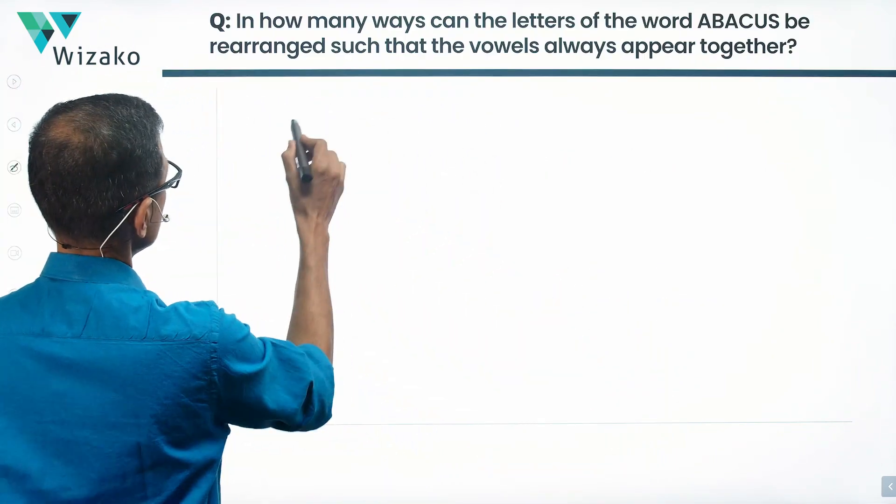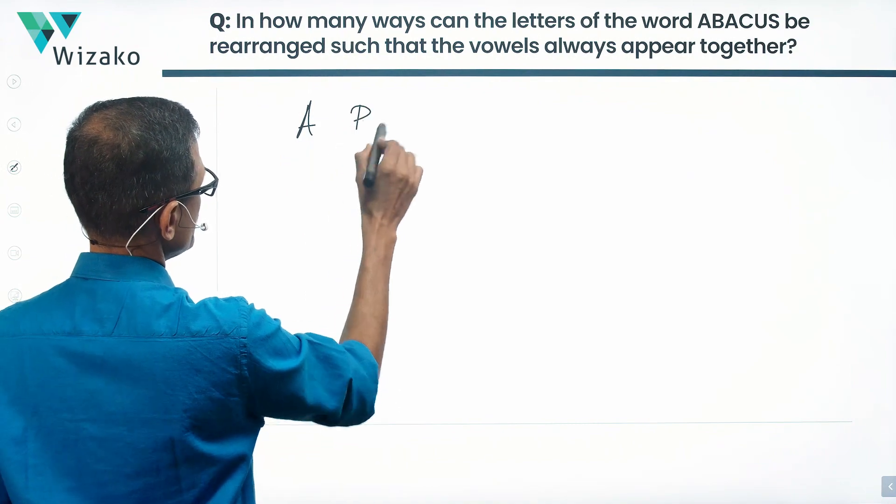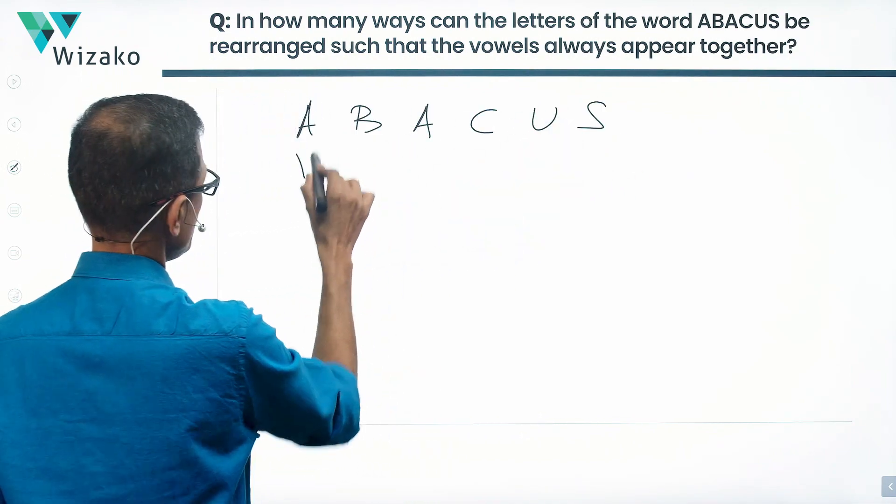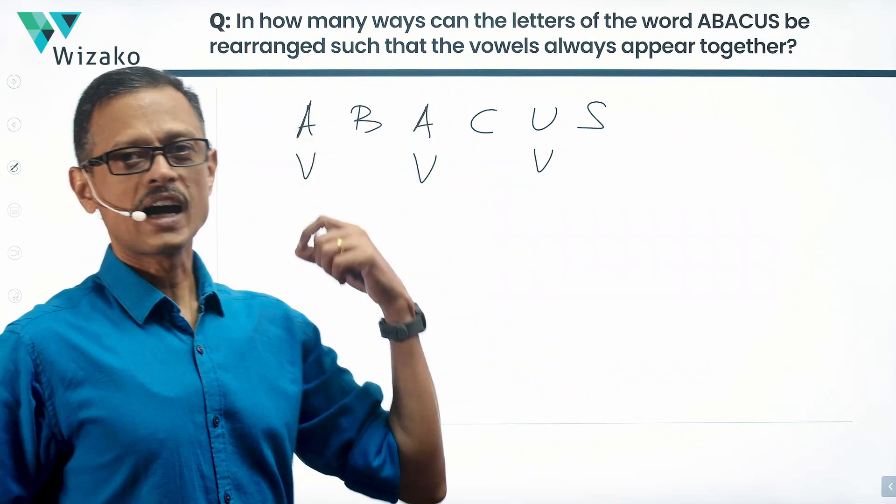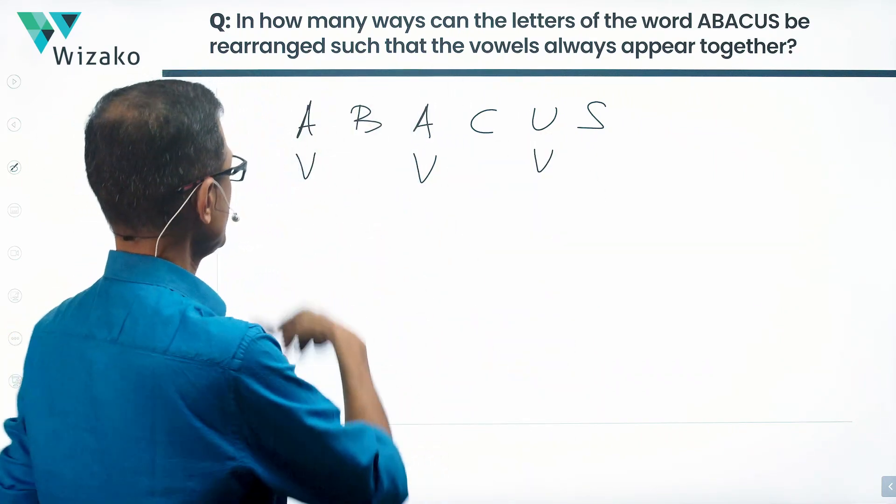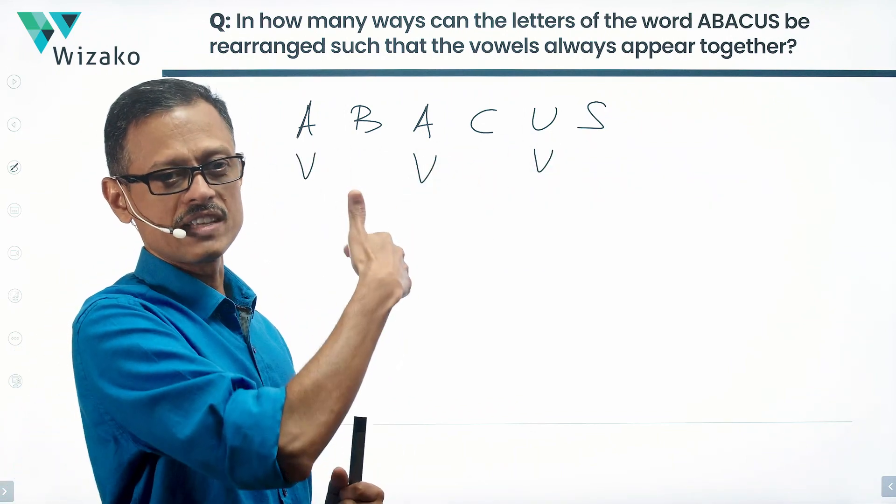ABACUS is a six-letter word: A, B, A, C, U, S. The three letters A, A, and U are vowels. The question says that the vowels should appear together, essentially meaning that this rearrangement is not a permitted one for this question.